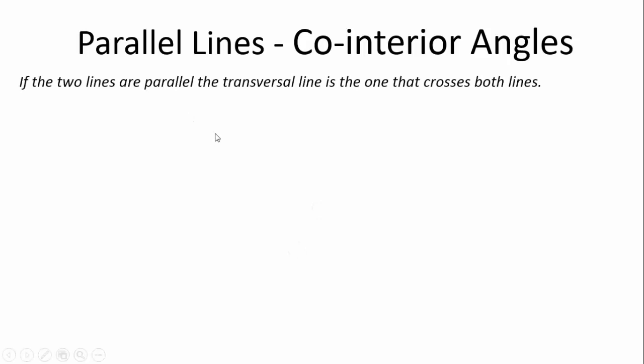Okay, if two lines are parallel, the transversal line is the one that crosses both the lines. If you don't understand what that means, make sure you watch the video on transversal lines.